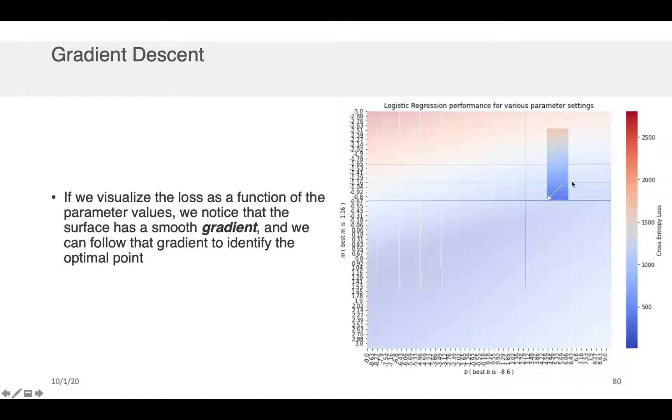And I could just keep sort of performing this process over and over, always trying to figure out which direction is the gradient pointing. And I could always take steps in that direction. And eventually, if I repeated this process, I would arrive at the optimal point for my values of m and b.